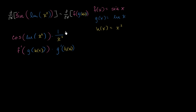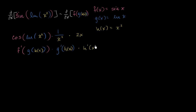Finally, we take the derivative of our innermost function with respect to x. The derivative of x² with respect to x is 2x. So we multiply by h'(x) = 2x.